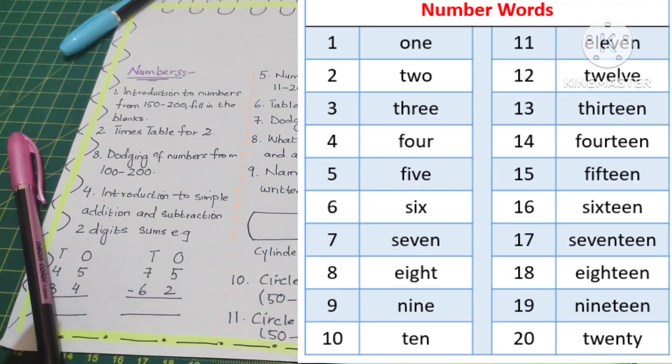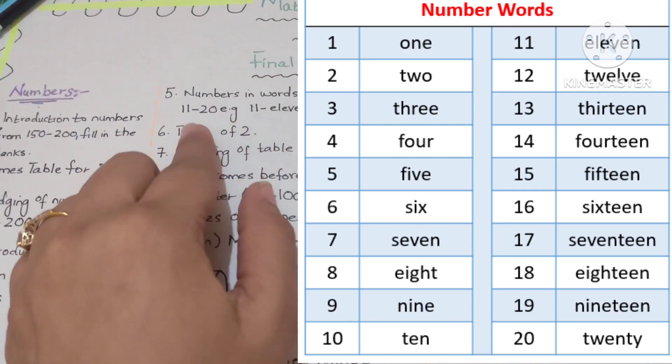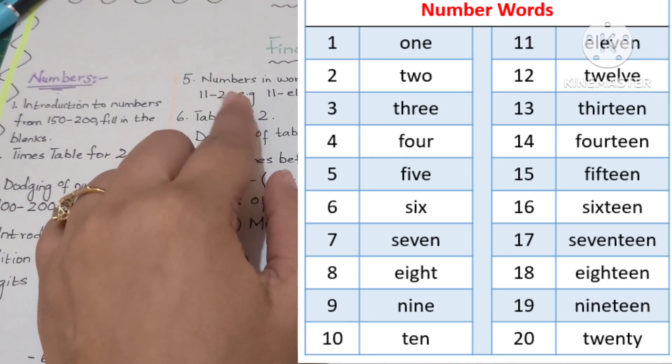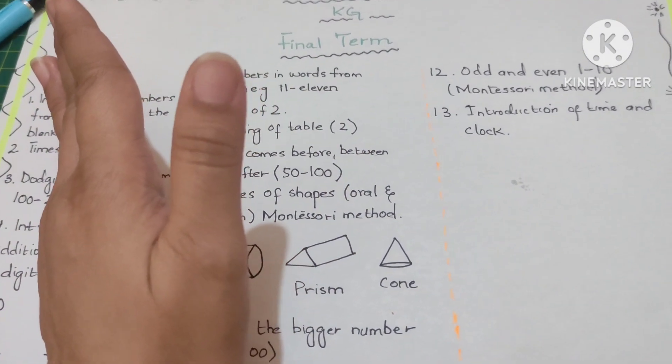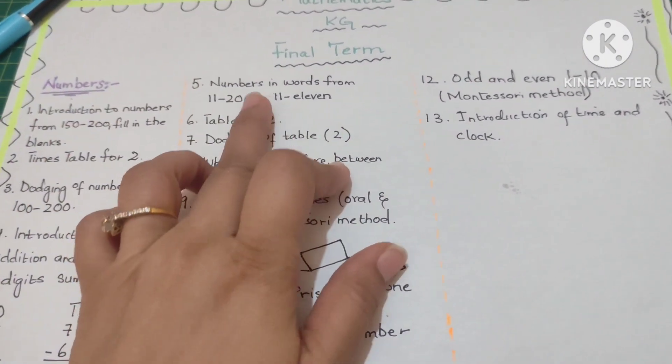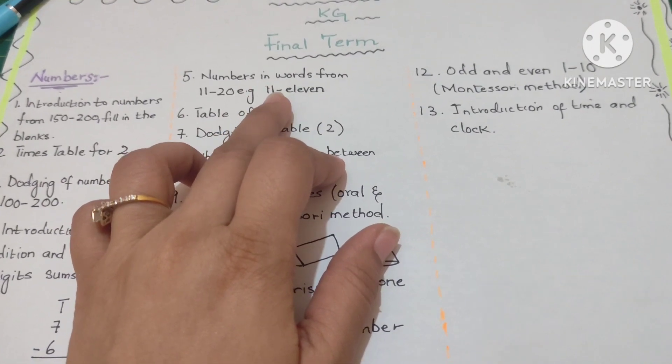Moving on to topic number five, that is numbers in words from 11 to 20. They have done from 1 till 10 thoroughly so they'll be moving to 11 to 20.